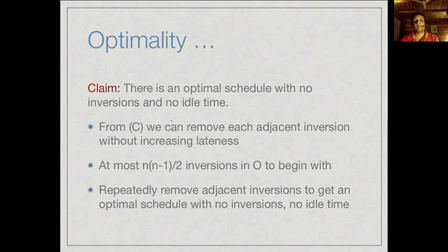So there is an optimum schedule with no inversions and no idle time. We have an optimum schedule with no idle time by the general principle, and from the previous argument we can remove every consecutive inversion without increasing lateness, so optimality is preserved. If we have n jobs, even if every pair is out of order, we have at most n(n-1)/2 inversions, and we can systematically remove every one without affecting optimality.